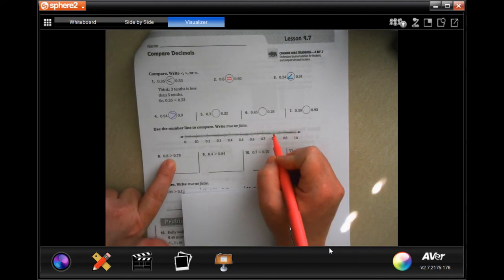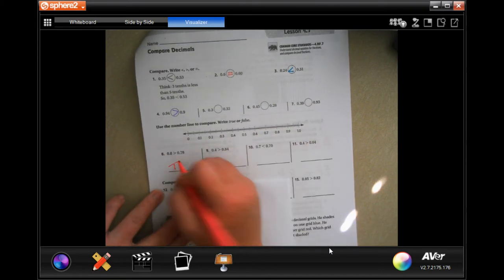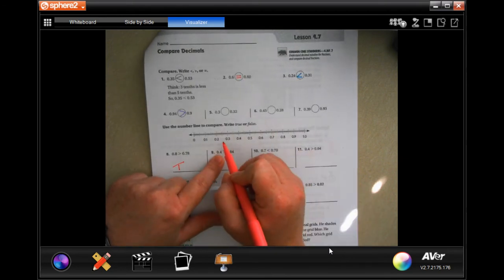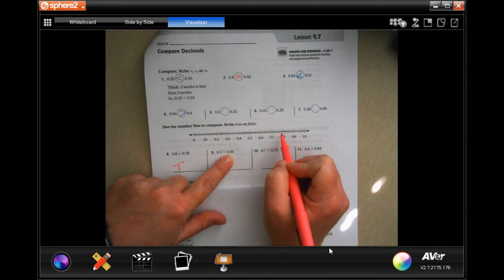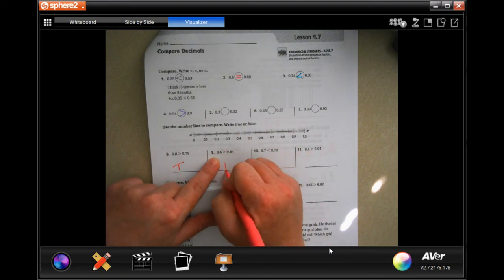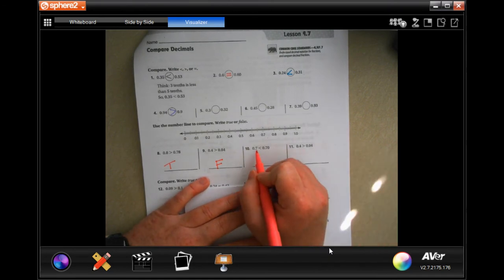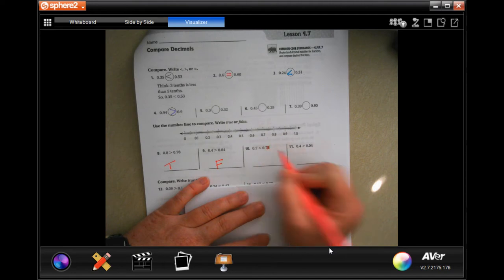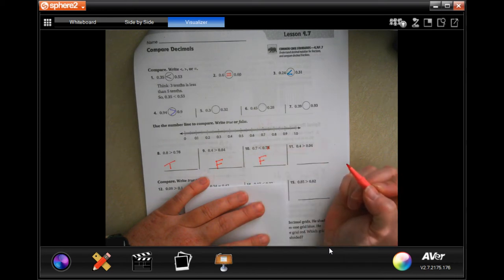So, 0.8, we have to go backwards for a 0.7 anything. It doesn't matter if it's 0.70, we'd have to go back. 0.79, we'd have to go back. So, that means 0.8 is bigger. That makes this true. Now, here's 0.4, and then it wants us to go to 0.8. 0.8 is all the way over here. So, 0.8 is bigger, but this says that 0.8 is smaller, so it's going to be false.